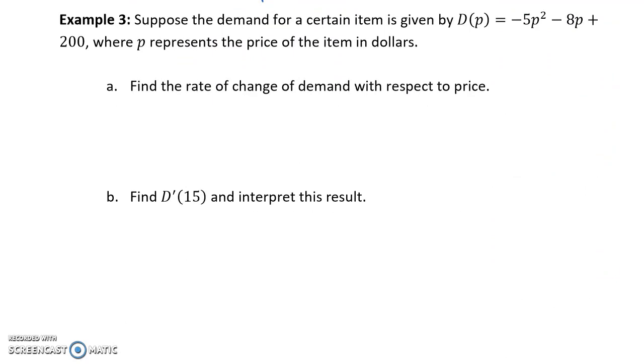In example 3, we're told that the demand for a certain item is given by this function D(p), where p represents the price of the item in dollars. First thing we want to do is find the rate of change of demand with respect to price. So that is just another way of saying we want to find the marginal demand function, or the derivative of that demand function, which in this case would be negative 10p minus 8.